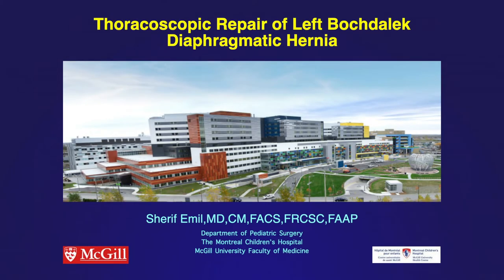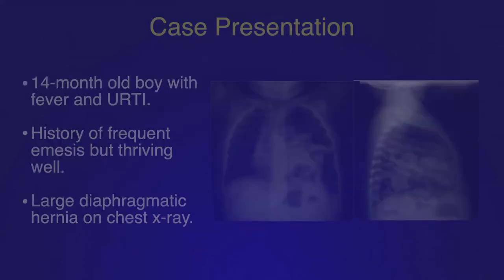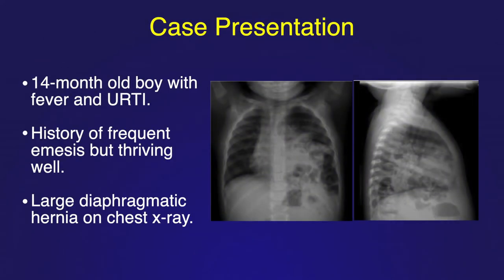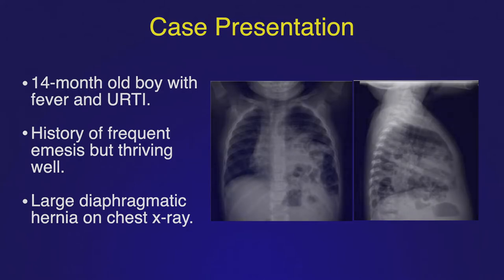This video will demonstrate thoracoscopic repair of a Bochdalek, or posterolateral, diaphragmatic hernia. The patient is a 14-month-old boy who presented with three days of fever and cough. A chest x-ray showed no evidence of pneumonia but revealed a large diaphragmatic hernia with bowel loops seen both anteriorly and posteriorly on the lateral film.